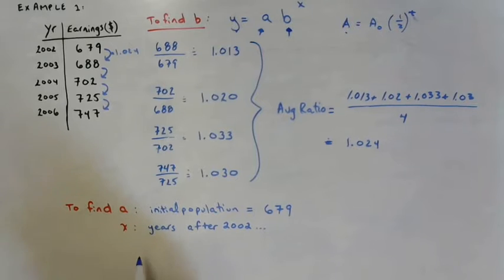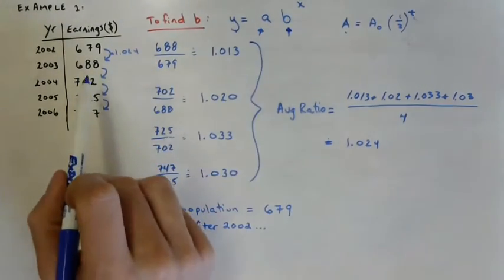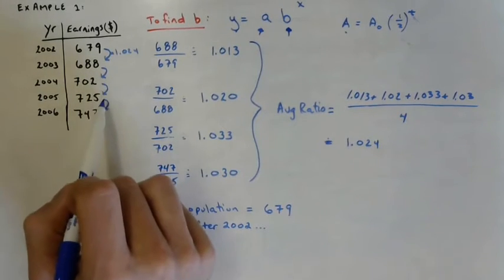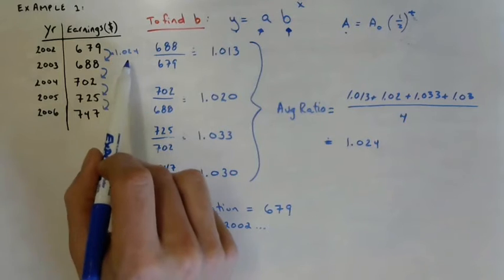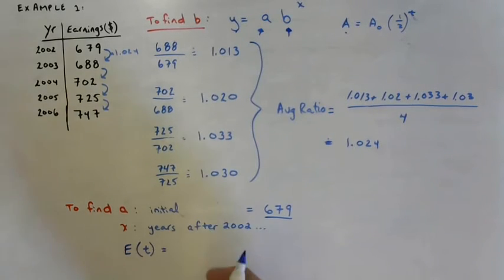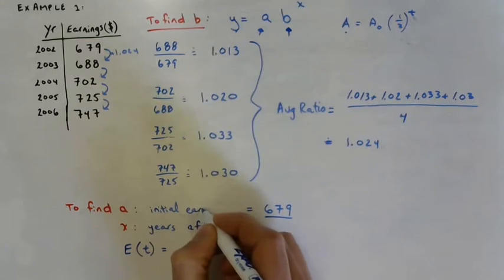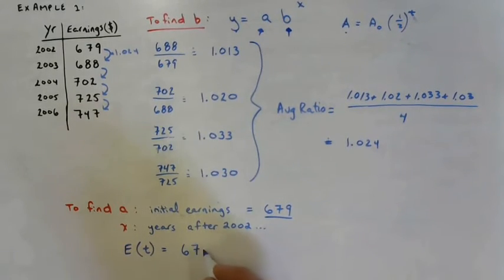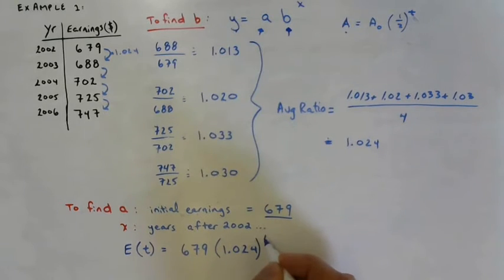So taking all that information, we can get a formula for the population to help us predict population. And we're going to use capital P for population. Oh no, sorry. This is not population at all. I don't know why I'm switching to population. It's earnings. So the amount of money earned weekly from year to year, you multiply by this ratio. Earnings. So earnings with respect to time, which is measured in years, is our initial earnings. I'll erase that word population. I don't know where that came from. Initial earning of 679 times 1.024 to the power of T.